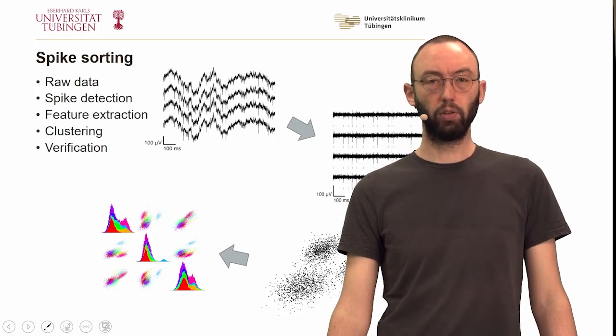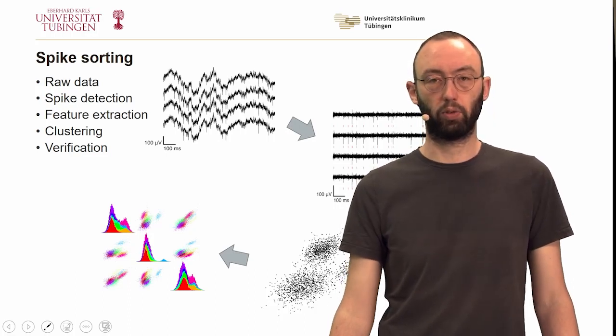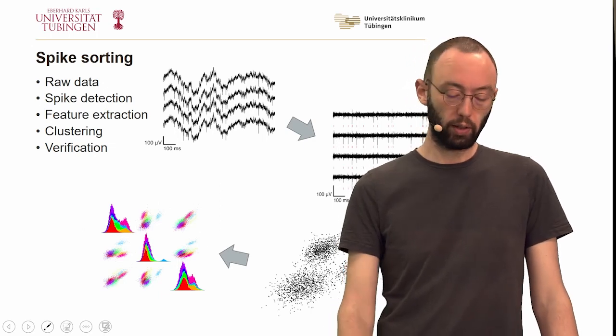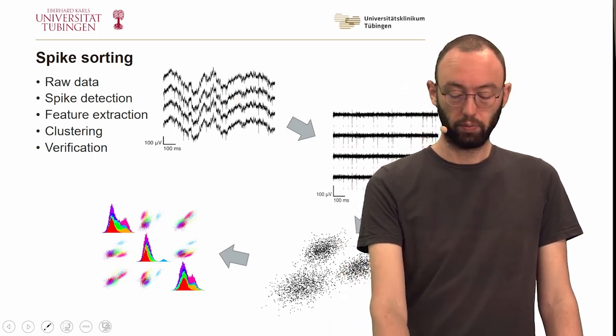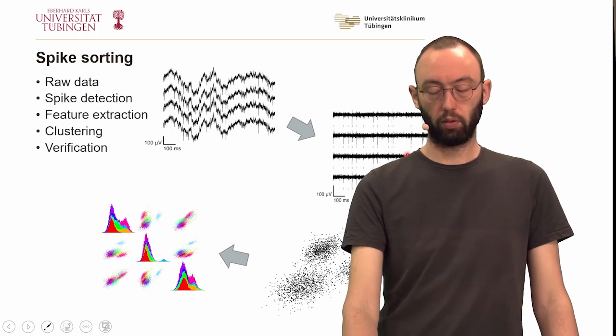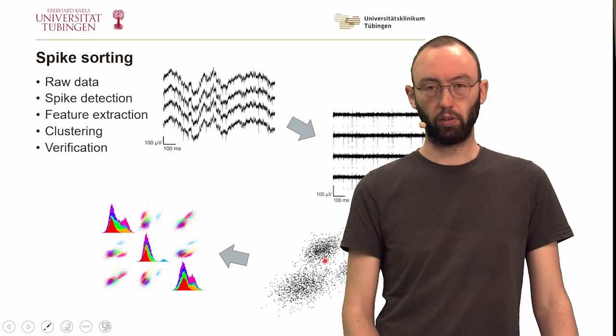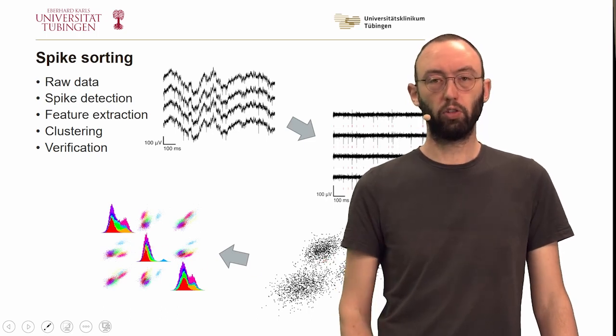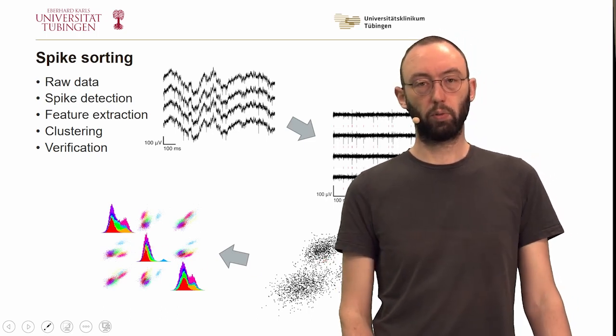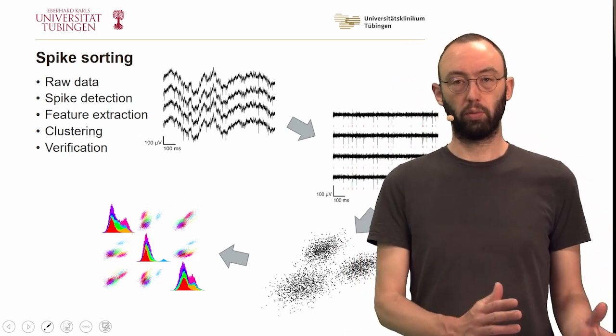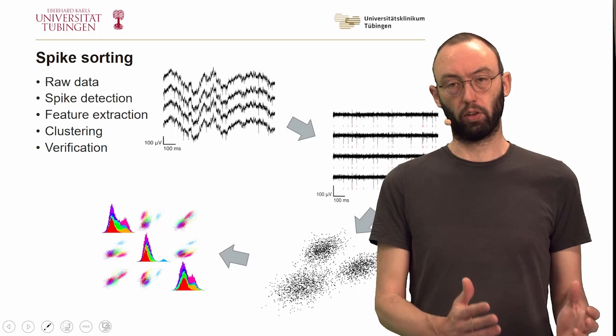Now this completes our entire spike sorting pipeline. Over the course of the first three lectures, we actually ran from raw recordings, we detected spikes, extracted spikes and extracted features, we performed clustering, and then we verified which of the individual clusters we found actually corresponds to biologically meaningful quantities like single neurons.